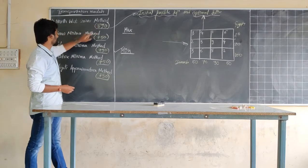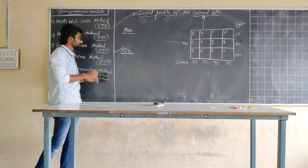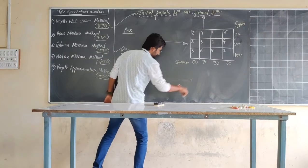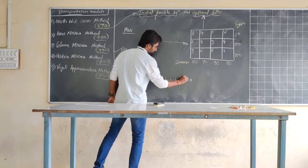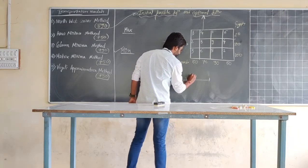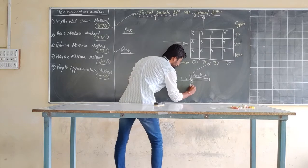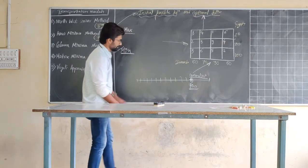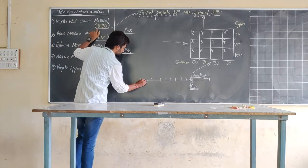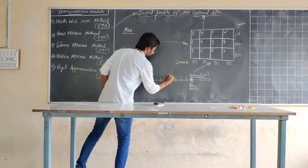By northwest corner method the transportation cost is 890, by row minima it is 750, by column minima it is 790. These are just answers that are bringing us close to the optimal solution. To illustrate this better, assume there is a scale which marks the optimal solution — and assume that the optimal transportation cost is 700 units. By northwest corner method the initial feasible solution is 890, and by row minimum method we have got it as 750.